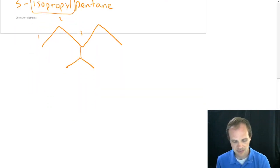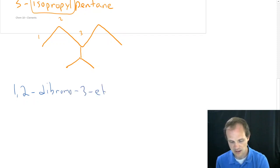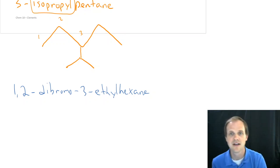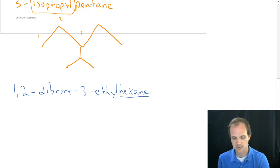Our next example is going to be 1,2-dibromo-3-ethylhexane. And you know, before you watch these videos, if I put that in front of you, you might have panicked. But that's actually not that hard. You start with the backbone of hexane. Hex is 6. 1, 2, 3, 4, 5, 6.